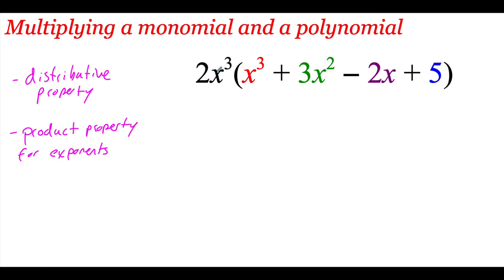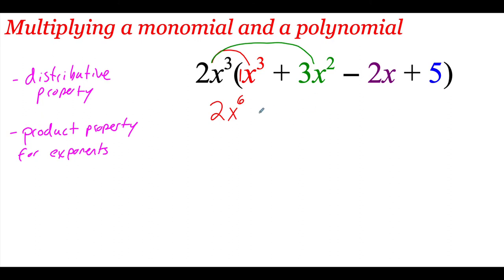I'm going to distribute in this 2x cubed. So I'm first going to multiply it by the x cubed. We're going to multiply the coefficients — the numbers in front of the variables. On the outside I've got this 2, but on the inside I've got this 1x cubed. So 2 times 1 is 2. Now when I take x cubed times x cubed using my product property, I add those exponents together, so that gives me x to the 6th. Taking 2x cubed times 1x cubed, I get 2x to the 6th.